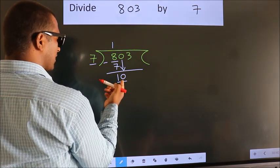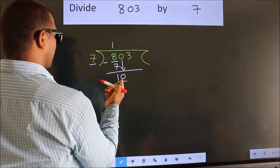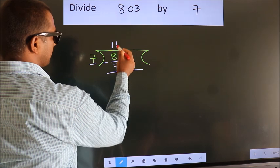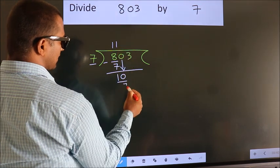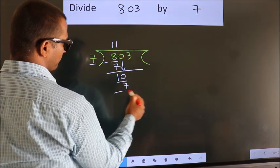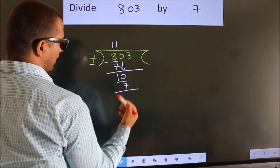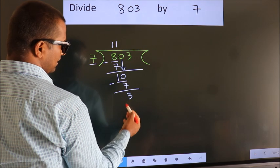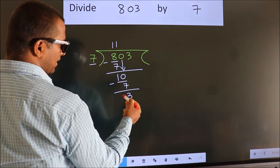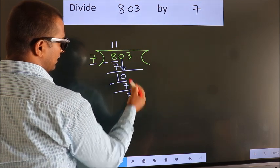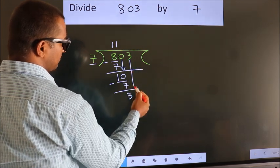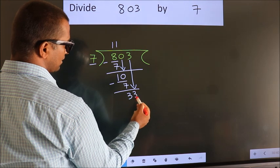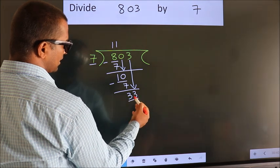A number close to 10 in the 7 table is 7 once 7. Now we subtract — we get 3. After this, bring down the beside number. So, 3 down. So, 33.